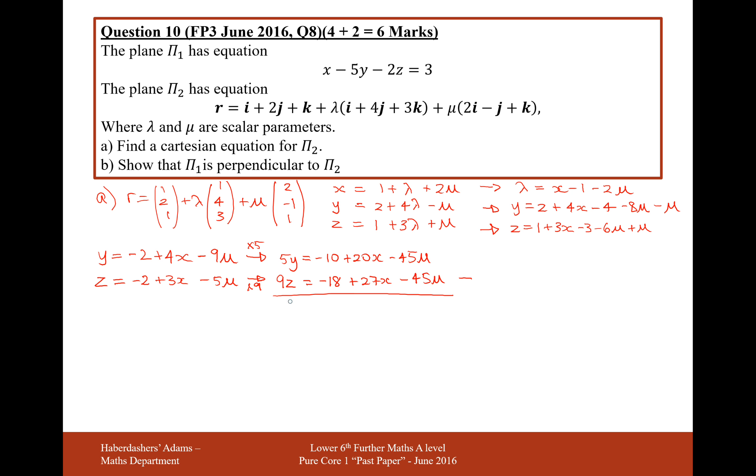But I'm subtracting in my columns here, so I'm going to get 5y minus 9z equals 8 minus 7x, and 0 on the final column there.